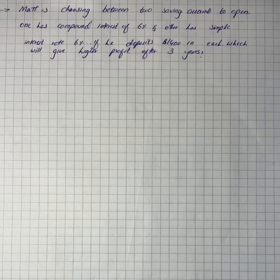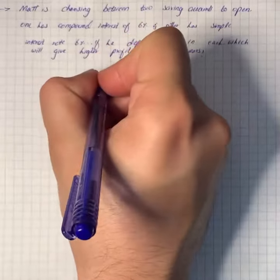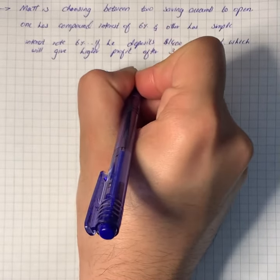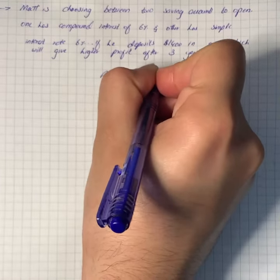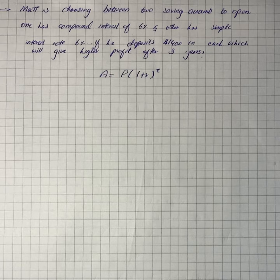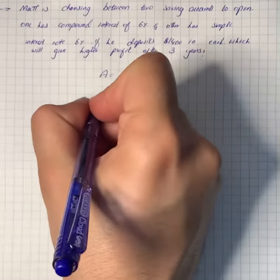We have to find the future value after three years using the compound interest formula. The compound interest formula is A = P(1 + r)^t, where r is the rate and P is the total deposit.